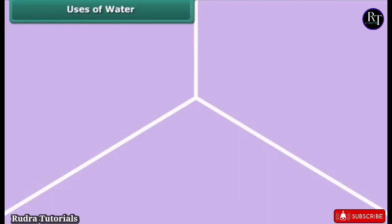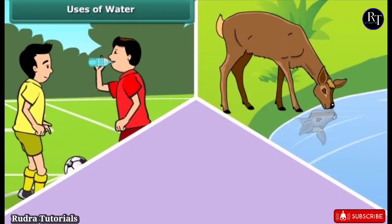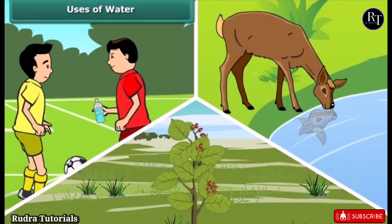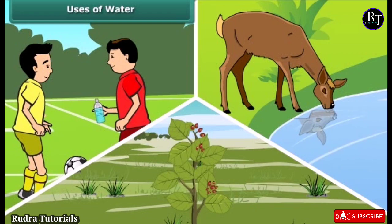Water is an essential part of human, animal and plant life. Living things cannot live without water. It is said that life originated in water and gradually shifted to land, but the connection and importance of water still remains the same. Water is essential for every living organism to grow and flourish.